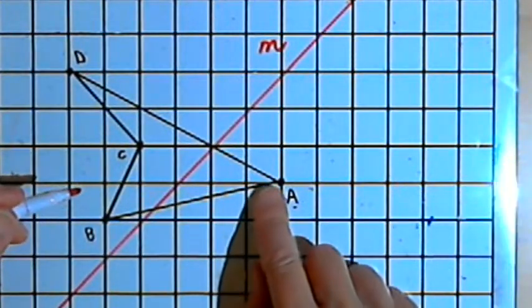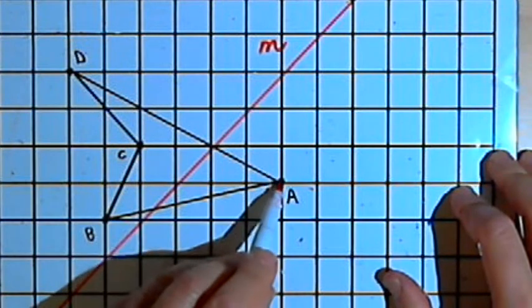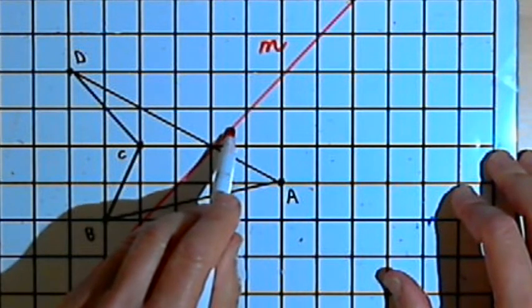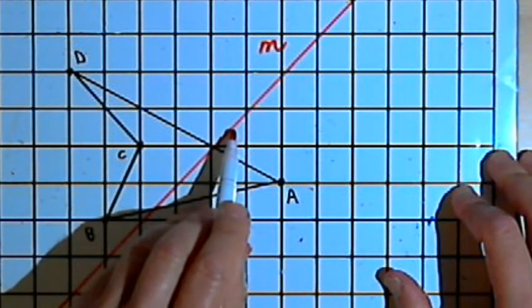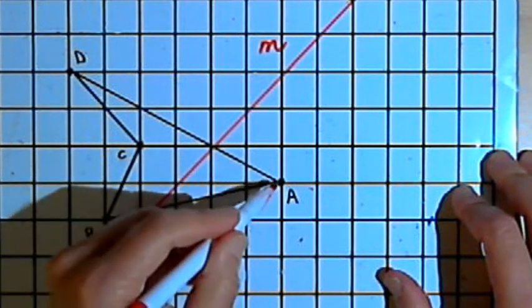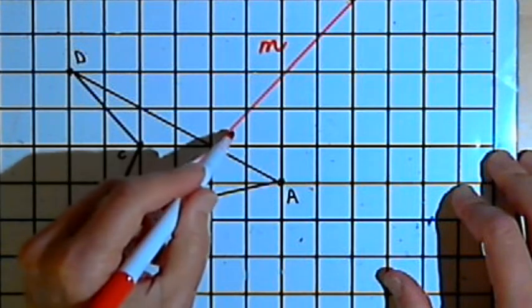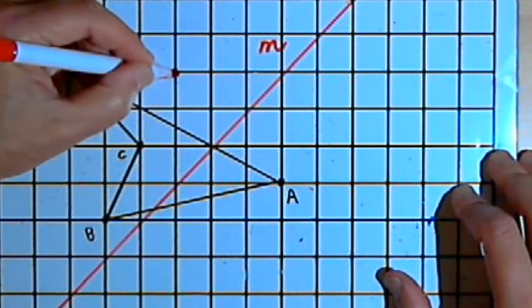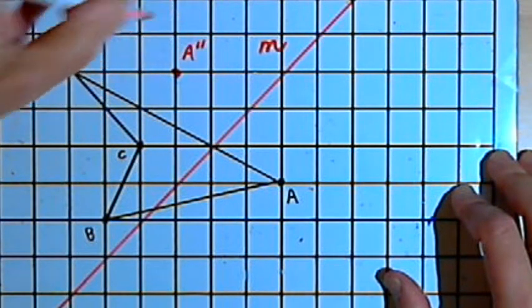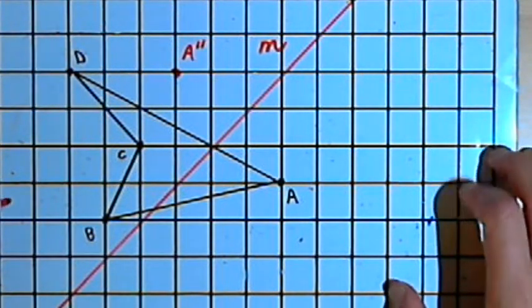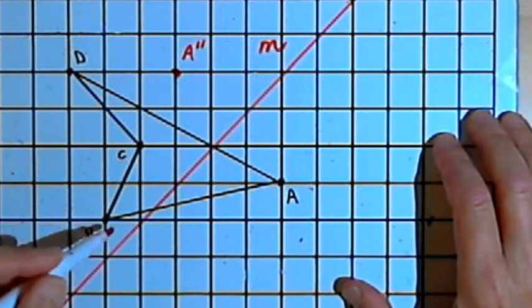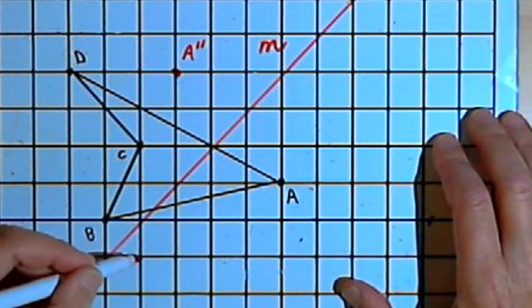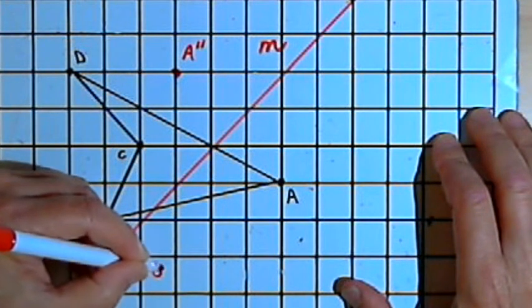So I want to start at point A. And point A is one and a half units diagonally from line M. So I want to go diagonal again at a 45-degree angle further in that direction. I want to go one and a half units. And that will take me to the point I'll label A double prime. Point B is one half unit diagonally from line M. So I'll go one half unit more. And that will take me to B double prime.